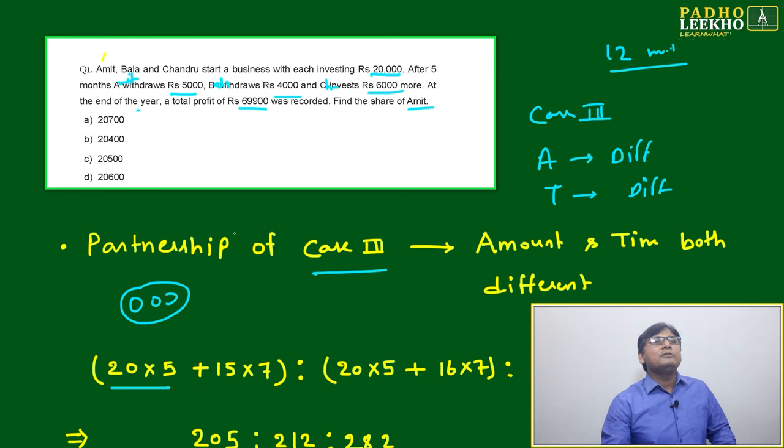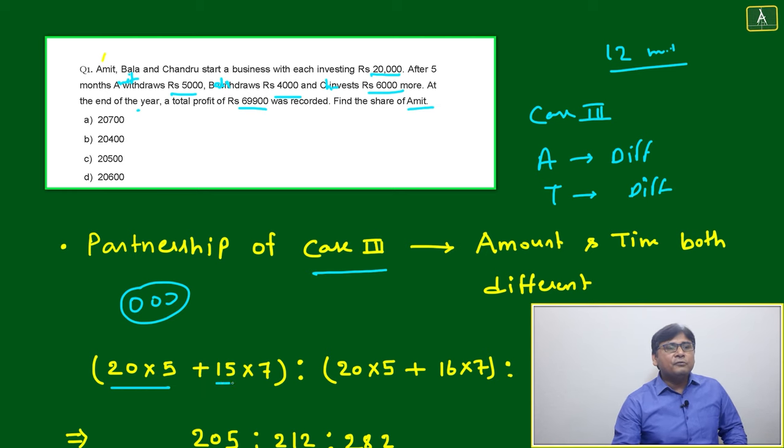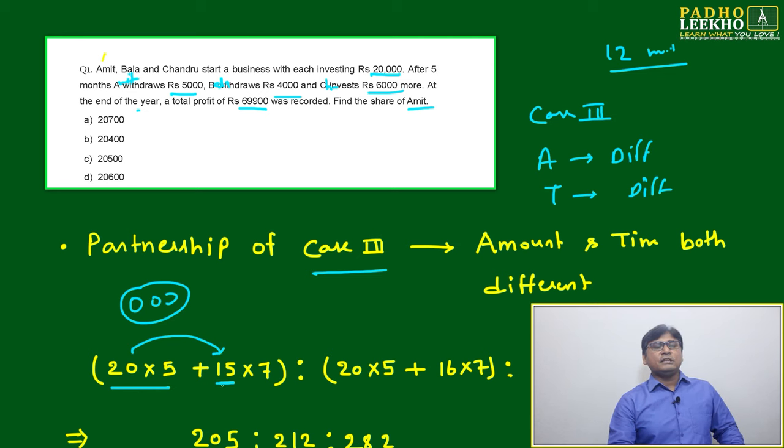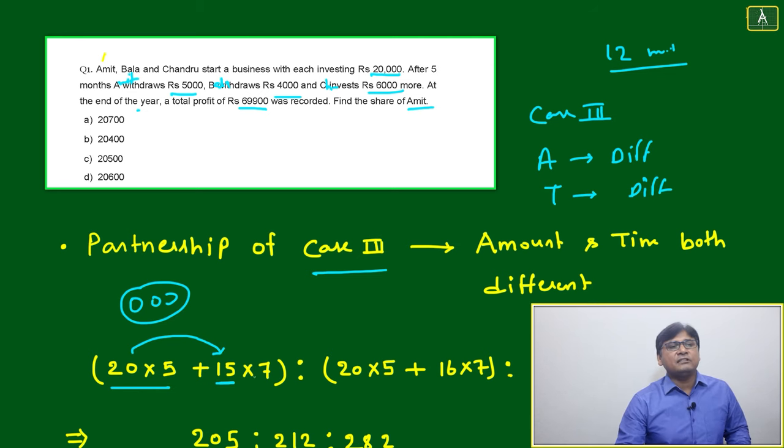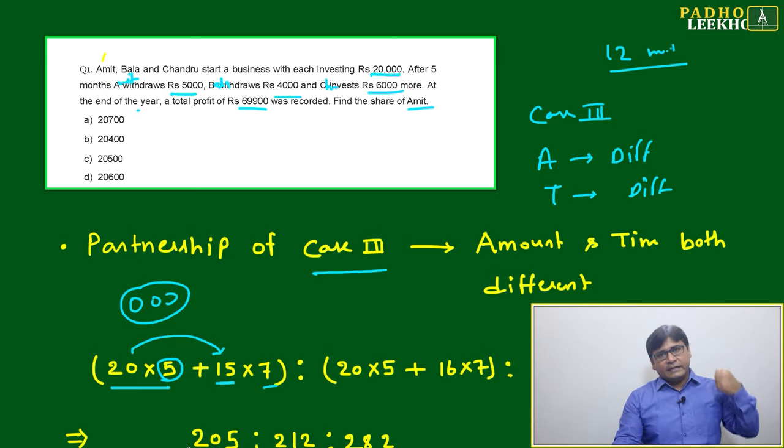How many months will be there? After 5 months, Amit withdraws 5,000, means remaining amount becomes 15,000. That will be for 7 months, and 20,000 for 5 months. Initially they put 20,000, for 5 months 20,000 will be there. After he took back 5,000, remaining 15,000 for the next 7 months.